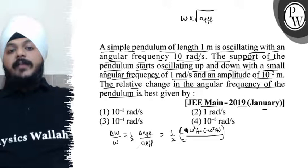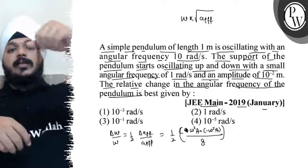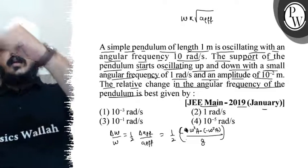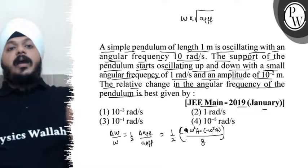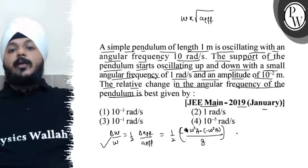All divided by effective acceleration, which is g. The pendulum is rotating and the support is oscillating. So delta omega by omega can be calculated.